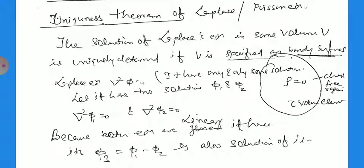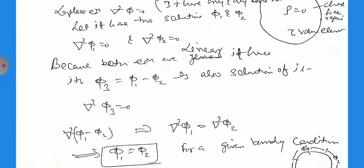In the figure, we have a closed surface with a volume element. The charge inside is zero, so we use the Laplace equation: del squared phi equals zero. Now suppose there are two possible solutions phi_1 and phi_2 on the surface. Both satisfy the Laplace equation: del squared phi_1 equals zero and del squared phi_2 equals zero. Because both equations are linear, their linear combination phi_3 equals phi_1 minus phi_2 is also a solution, giving del squared phi_3 equals zero.